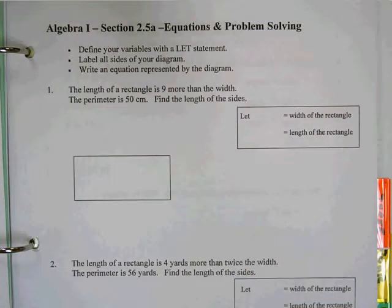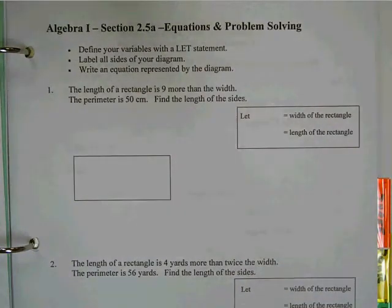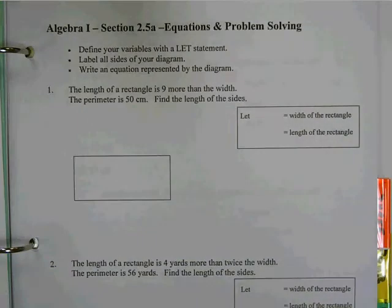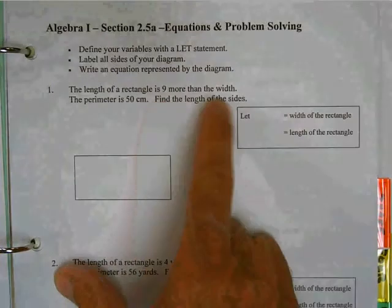When we're talking section 2.5, we're going to have diagrams. Remember when you had the diagram the other day and you only had two sides of it labeled? What did I say was important to do when you have a diagram? You've got to label all the sides. So here we have this situation. We've got the length of this rectangle 9 more than the width.